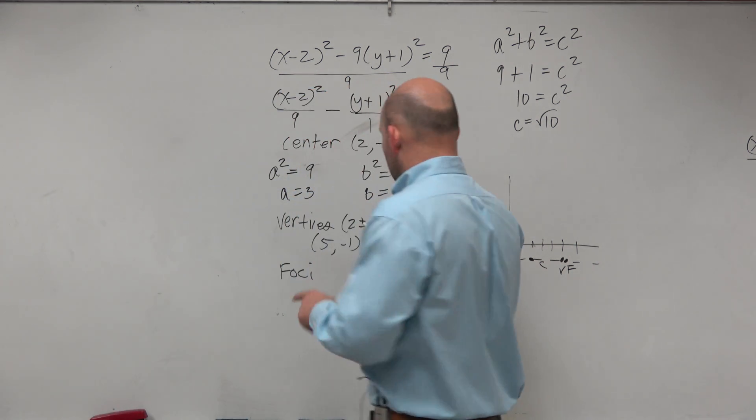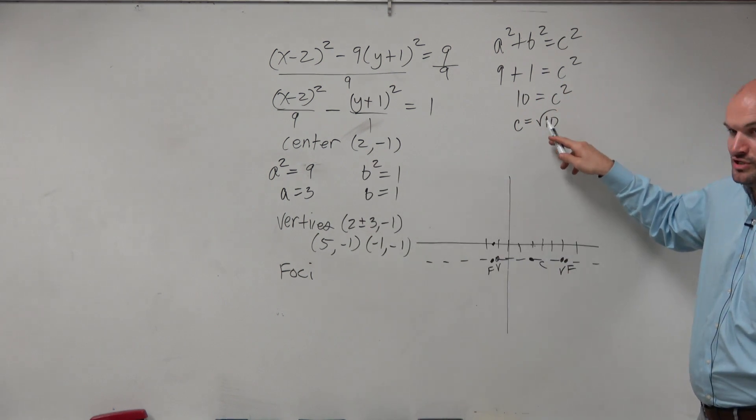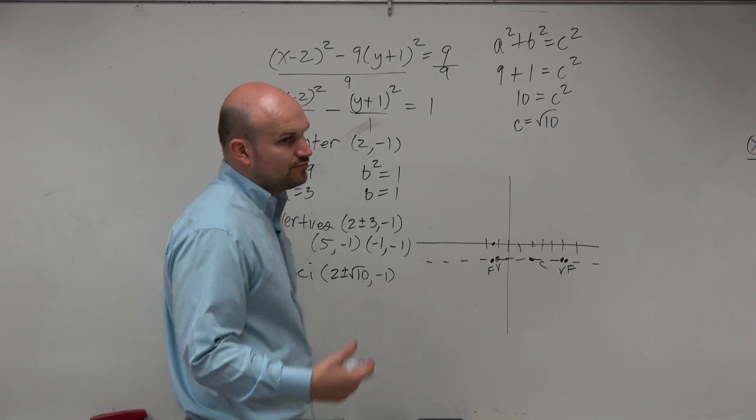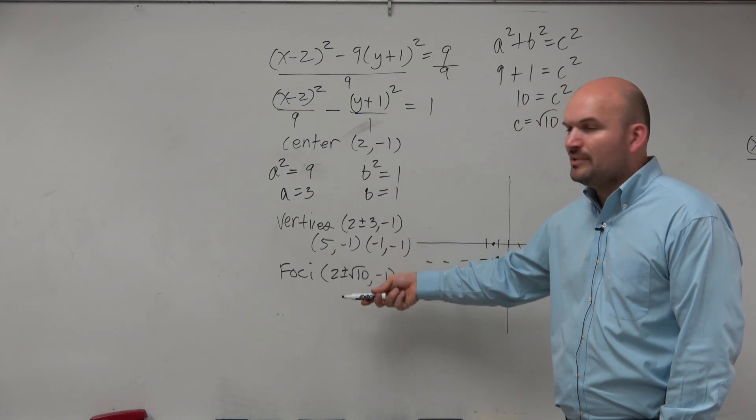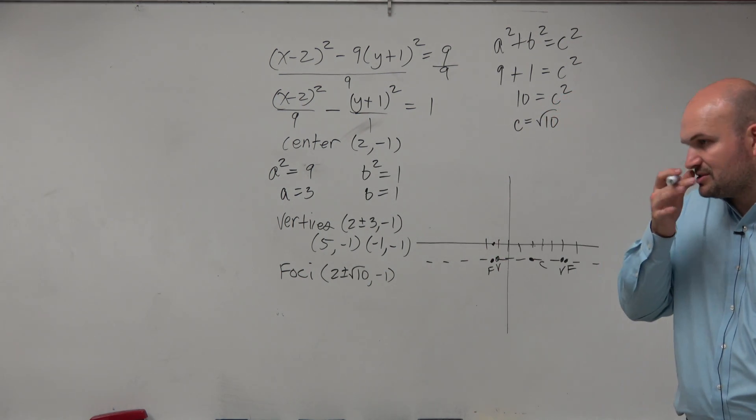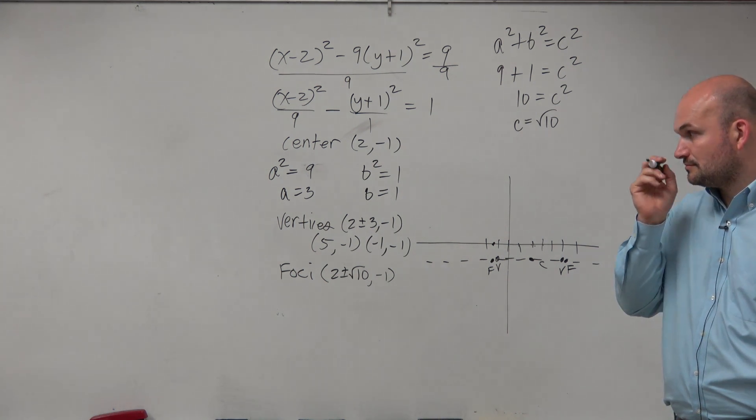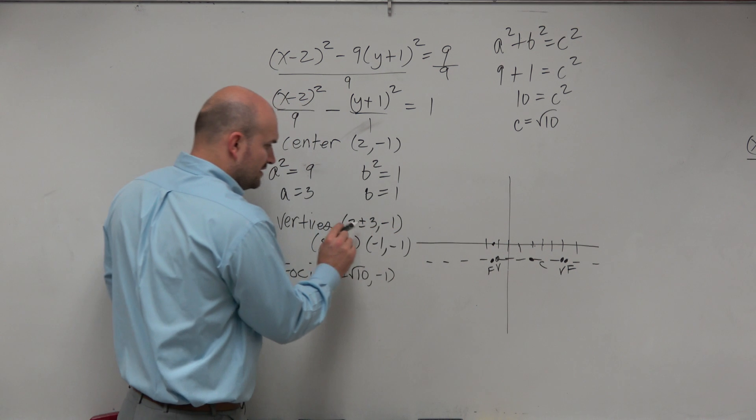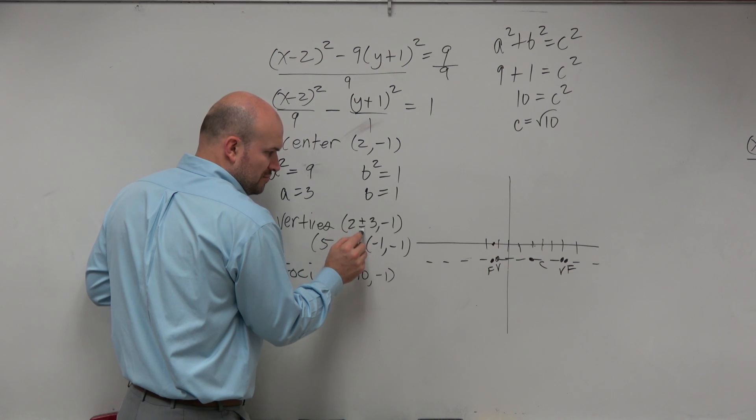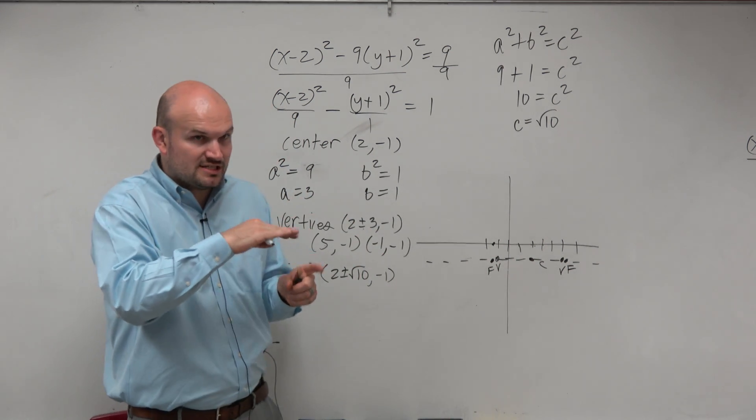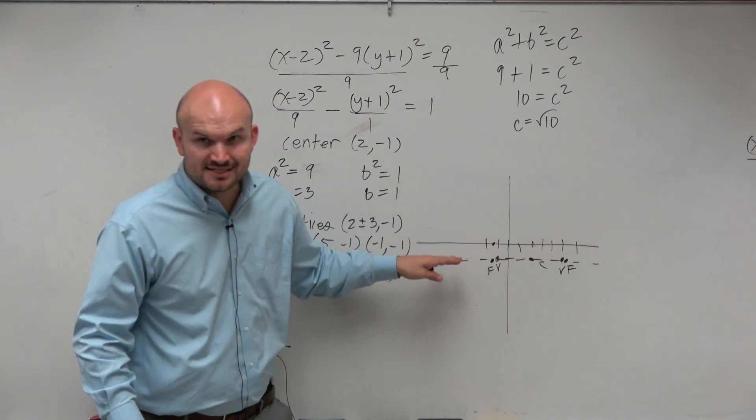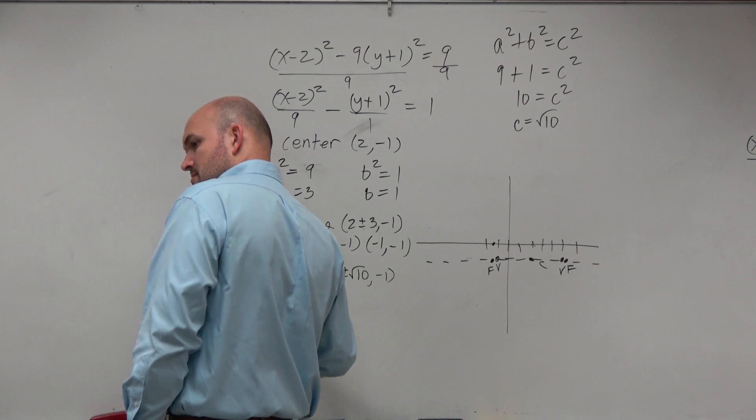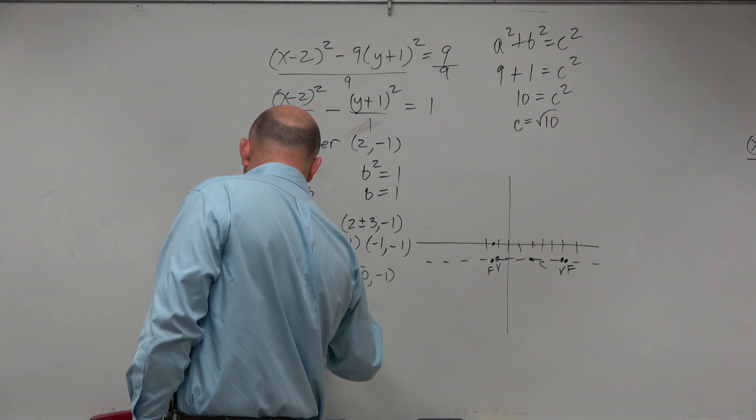So now, again, we're going left and right. So just like I did 2 plus or minus 3, I'm now going to be doing 2 plus or minus square root of 10 because we're going left and right. So in this example, we're going to have (2 ± √10, -1). Now, you could write that as two different points, like I did over here. But usually when you're dealing with radicals, you can just leave it as the plus or minus.